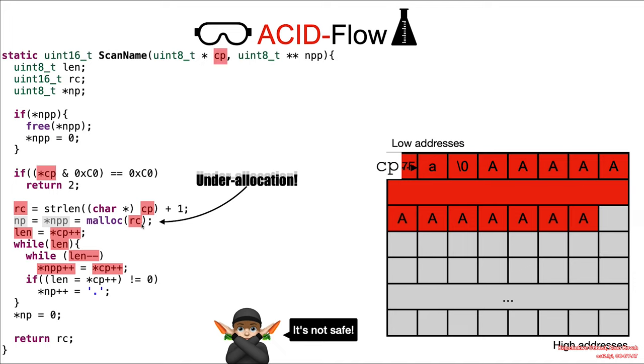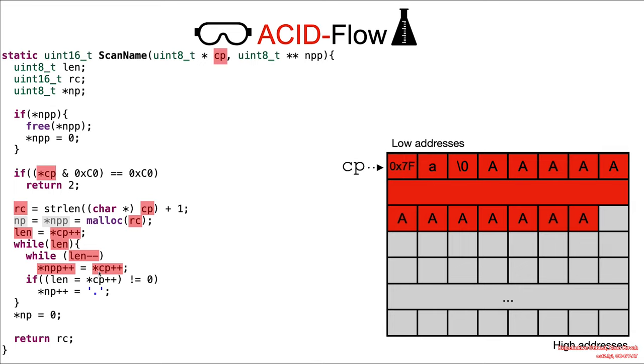So once again, the under-allocation occurs because we use the wrong function, strlen, to determine the length of the allocation. And then we copy, now using the original length, into the buffer.